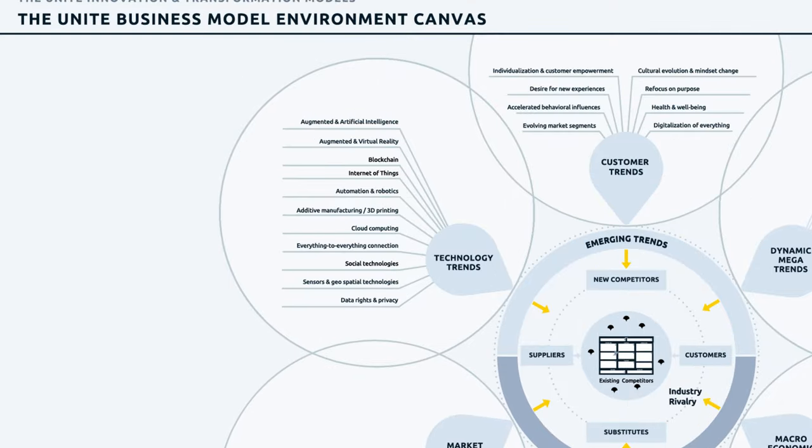Let's go through some examples. You can't look into technology trends without considering the impact of blockchain and distributed ledger technology. On a more political level, data rights and privacy emerge. And with 3D printing and additive manufacturing, entirely new ways of production have surfaced and developed.